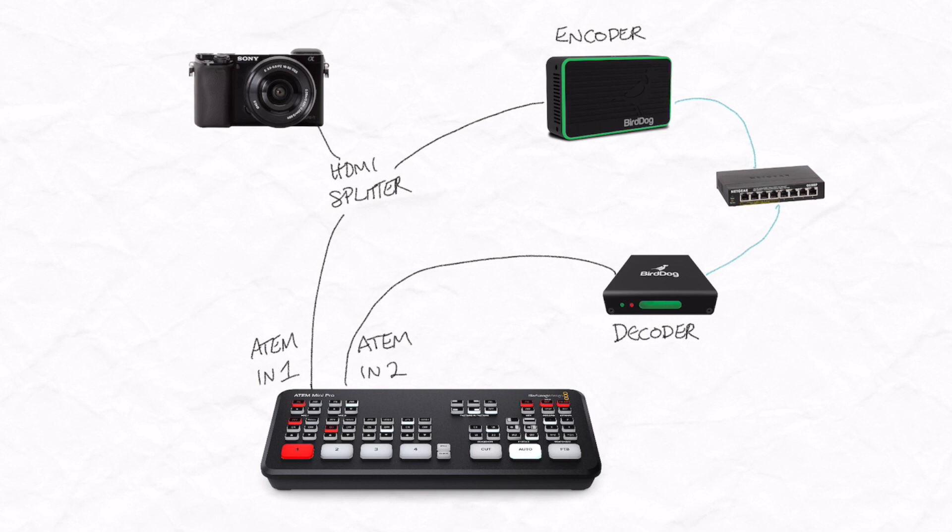So we've got two identical signals — one going directly into the ATEM Mini, the other being encoded into NDI, going over the network, decoded back to HDMI, and going into the ATEM Mini. Let's fire them up and see how they look.